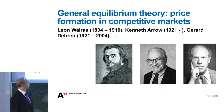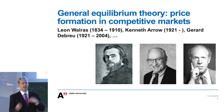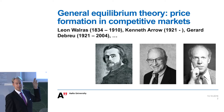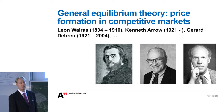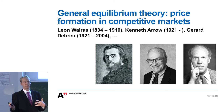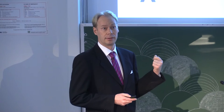Let me start by putting auctions in the context of economic theory. Economics is about resource allocation. Resource allocation goes hand in hand with price formation. The traditional theory in economics about resource allocation and pricing is called General Equilibrium Theory. It's a very elegant theory about how prices are formed — basically demand and supply — but it lacks two very important ingredients: strategic interaction and informational asymmetries.